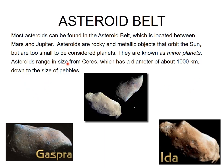Asteroids range in size from Ceres, which has a diameter of about 1,000 km, down to the size of small objects just a few meters across.